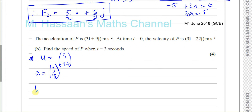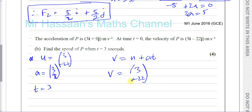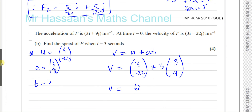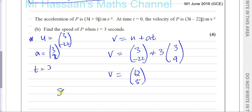We find the velocity first: v equals (3, −22) plus 3 times (3, 9). That gives (3 + 9, −22 + 27) which is (12, 5). The speed is the magnitude of the velocity: the square root of 5 squared plus 12 squared, which gives us 13 metres per second — a 5, 12, 13 triangle. And there's the answer to part B.